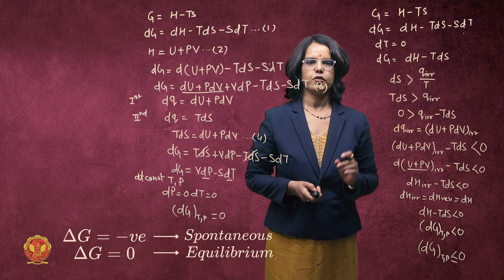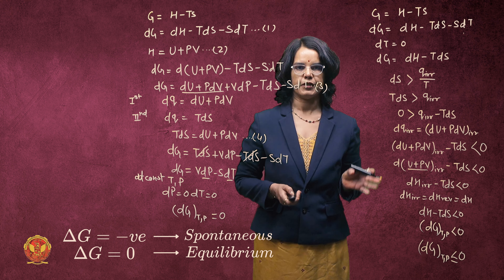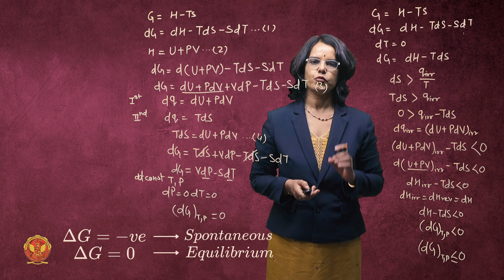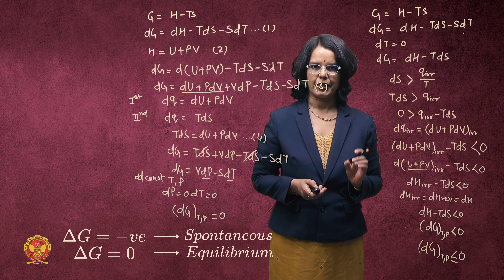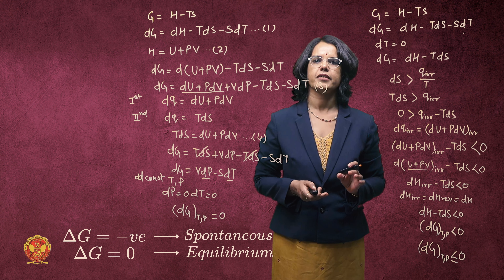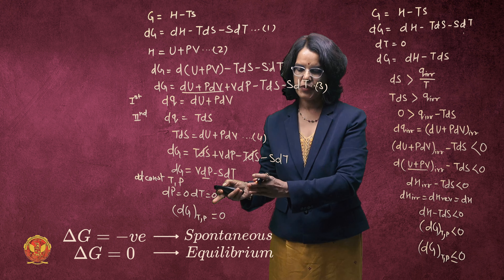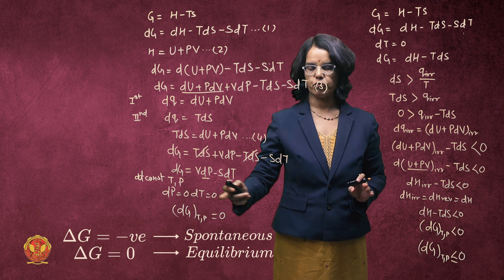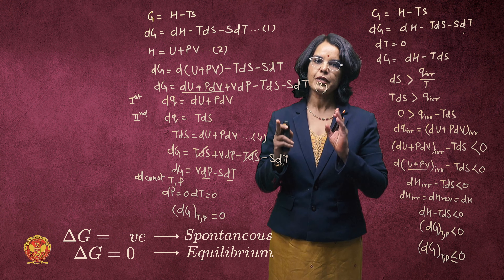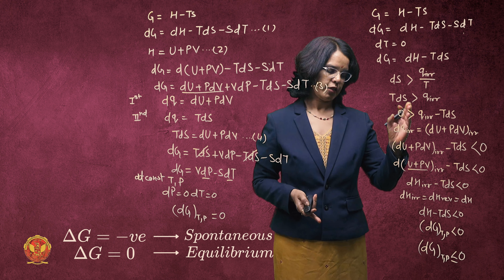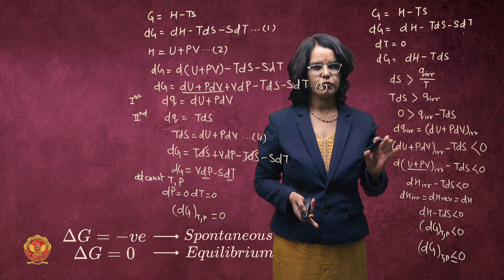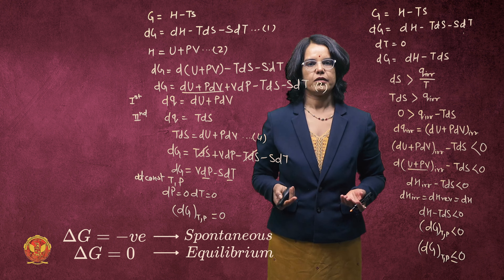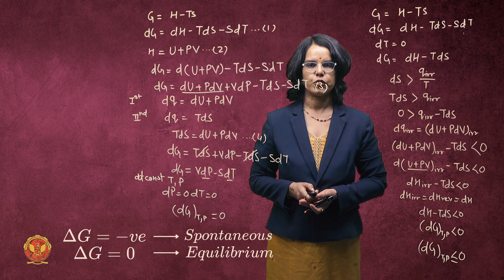We can assess the thermodynamic system by evaluating the sign of dG. If the dG value is zero, it means the system is in an equilibrium state. If it is negative, the process is spontaneous; if positive, the process is not thermodynamically feasible.